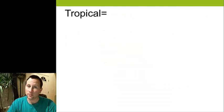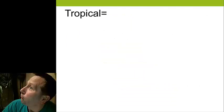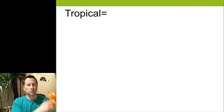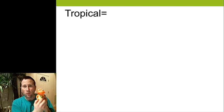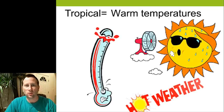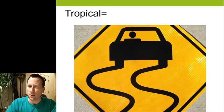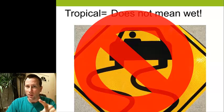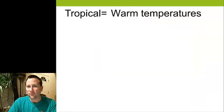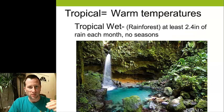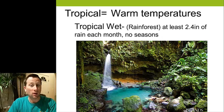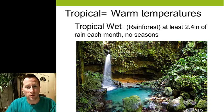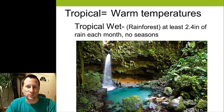We'll start out with tropical. Tropical means warm temperatures — but it doesn't mean wet. Many people think tropical rainforest, and that's actually our first category of a tropical climate. It's called tropical wet, or basically what you would call tropical rainforest. But not all tropical climates are wet, as we'll see in a minute.